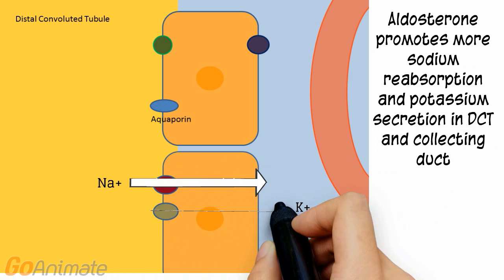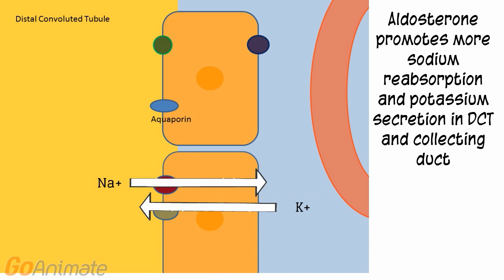Aldosterone promotes more sodium reabsorption and potassium secretion in the distal convoluted tubule and collecting duct by opening sodium and potassium channels.